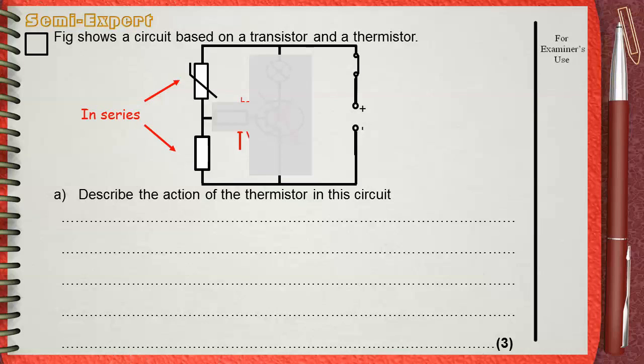This is what will happen. If you remember this circuit, you will remember that this is a heat alarm that will work when temperature increases. So, when temperature increases, the resistance of the thermistor decreases.